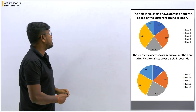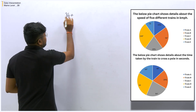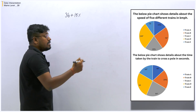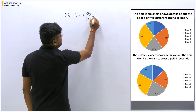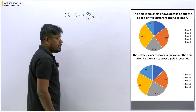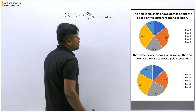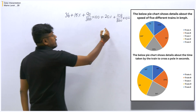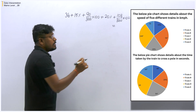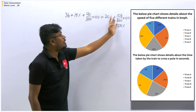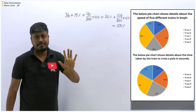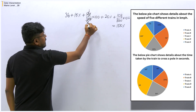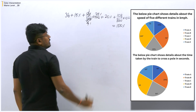I will convert everything into percentage since that seems easier. First value is 36 — it's a direct value, keep it as is. Next is 15% — keep as is. Next is 90 degrees: convert as 90 divided by 360 into 100, which gives 25%. Next is 20% — keep as is. Next is 108 degrees: 108 divided by 360 into 100 gives 30%. So we have 5 trains and all values are now in percentage, totaling 100%.